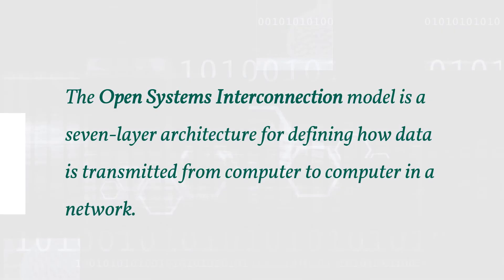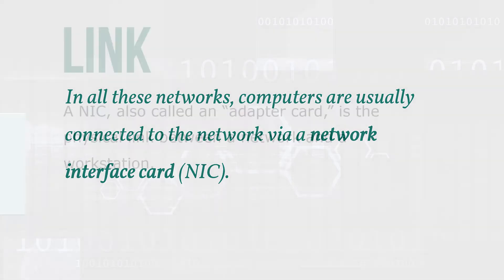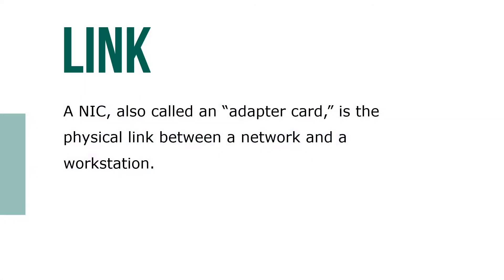The Open Systems Interconnection (OSI) model is a seven-layer architecture for defining how data is transmitted from one computer to another in a network. In all of these networks, computers are usually connected to the network via a network interface card, known as a NIC. A NIC, also called an adapter card, is the physical link between a network and a workstation.